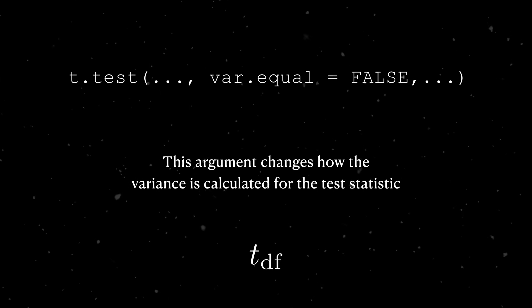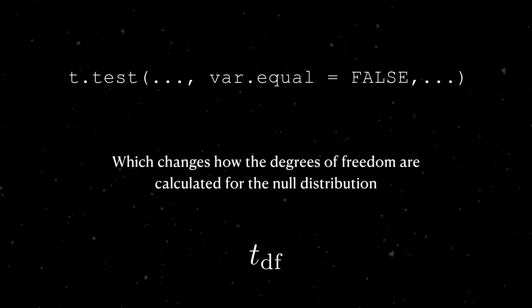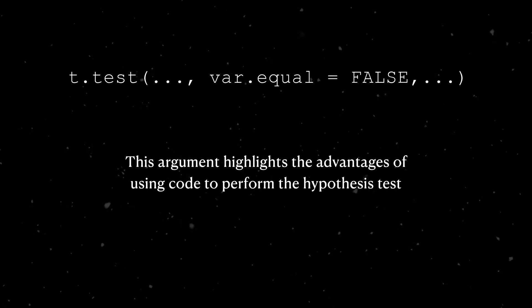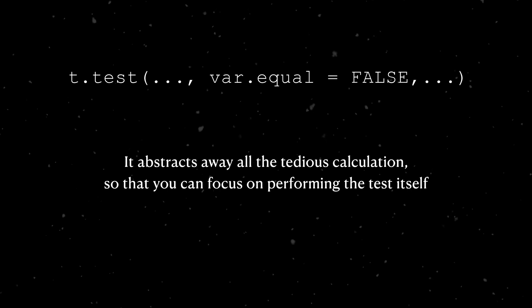This assumption changes how the variance for the test statistic is calculated, and by extension, changes how the degrees of freedom for the null distribution are calculated. And this highlights the power of being able to stuff this method into a function. We don't have to worry about the specific details and calculations, we can just focus on our assumptions and actually perform the test.